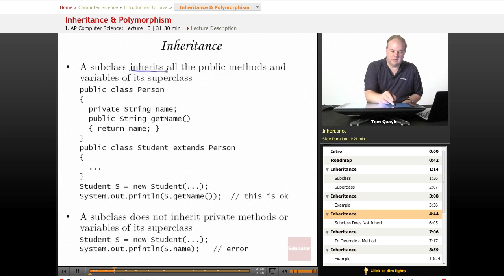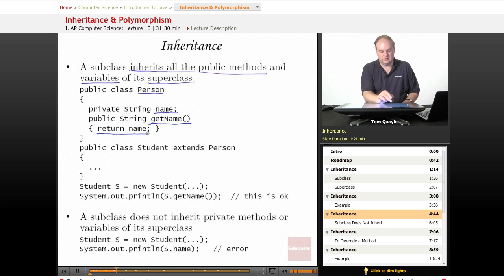A subclass also inherits all the public methods and all the public variables of the superclass. So in my superclass person, I probably have the name of a person and I may have a getName method that returns the name. Because name is a private string, I want to have an accessor that gets the name and returns it to wherever in the code is using this person.